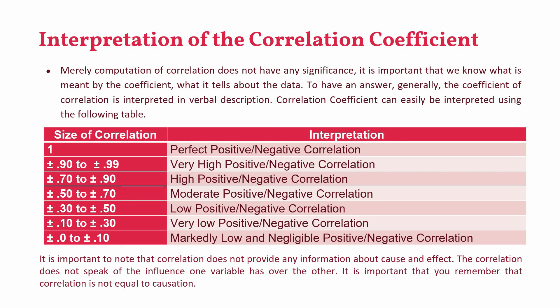When interpreting the correlation coefficient, it is not enough just to report the significance of the relationship. It is very important to show how well the variables are related — what is the strength of the relationship. There is an interpretation table: a value of 0.90–0.99 shows very high positive or negative correlation and may indicate multicollinearity. Values of 0.70–0.90 indicate high correlation; 0.50–0.70 moderate; 0.30–0.50 low; 0.10–0.30 very low; and below that, negligible positive or negative correlation.